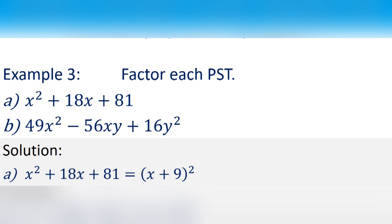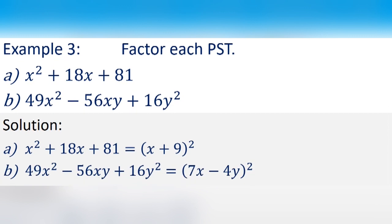Example number 3: factor 49x squared minus 56xy plus 16y squared. Check if the first and last terms are perfect squares. Square root of 49x squared is 7x, and square root of 16y squared is 4y. Check the middle term: 2 times 7x times 4y equals 56xy — confirmed. Therefore, 49x squared minus 56xy plus 16y squared equals the square of 7x minus 4y.